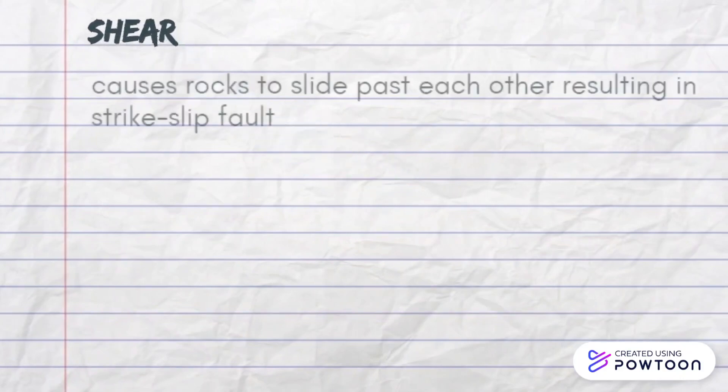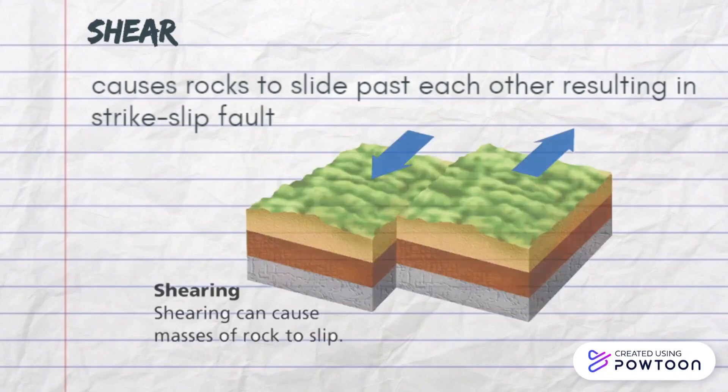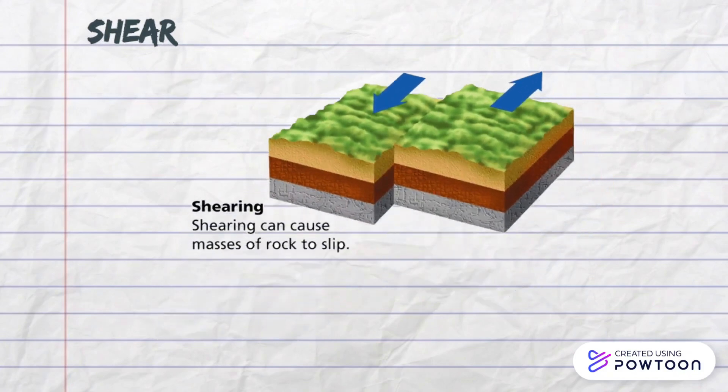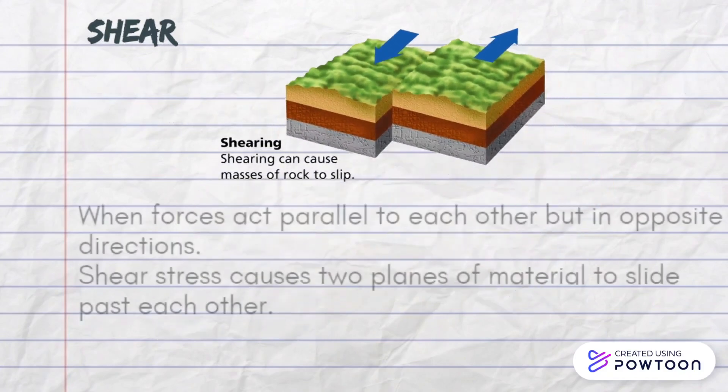Shear causes rocks to slide past each other, resulting in a strike-slip fault. Shear stress happens when forces act parallel to each other but in opposite directions, causing two planes of material to slide past each other.